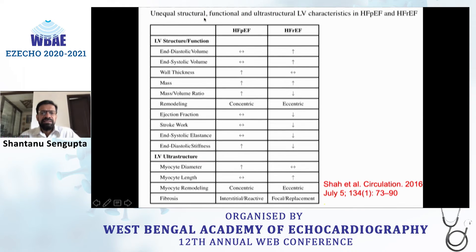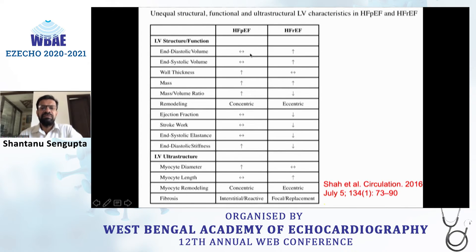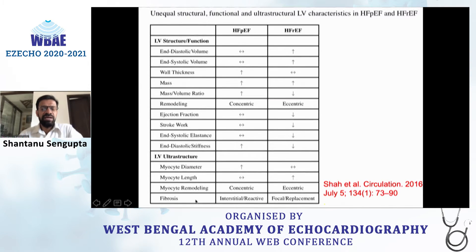This is recent data from 2016 understanding the structural, functional, and ultrastructural characteristics of the left ventricle, comparing both HFpEF and HFrEF. Volumes in HFpEF are unchanged, while in HFrEF the LV is dilated. Wall thickness is greater in HFpEF; remodeling is mostly concentric in HFpEF but eccentric in HFrEF. Ejection fraction and stroke work are maintained in HFpEF. At the ultrastructural level, myocyte diameter increases in HFpEF, while fibrosis identified by cardiac MRI is interstitial or reactive in HFpEF versus focal replacement in HFrEF.